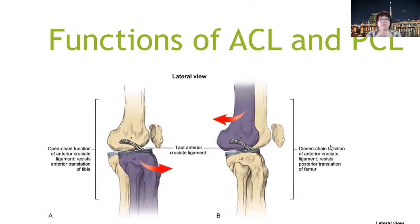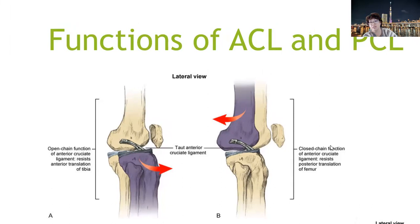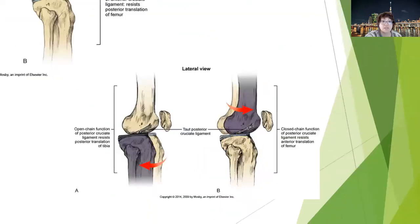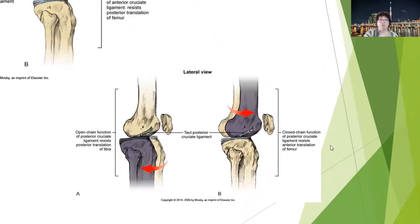Looking at the lateral view of the ACL and PCL: the naming refers to where each ligament attaches on the tibia. The anterior cruciate ligament attaches posteriorly on the femur and anteriorly on the tibia. In open chain, the ACL resists anterior translation of the tibia; in closed chain, it resists posterior translation of the femur. The PCL attaches anteriorly on the femur and posteriorly on the tibia.